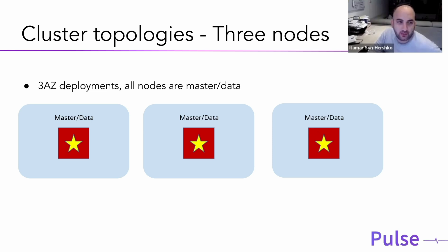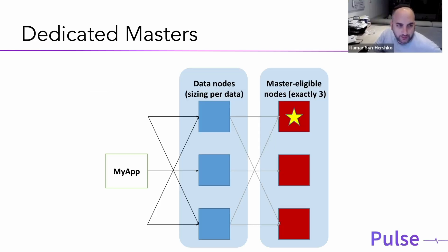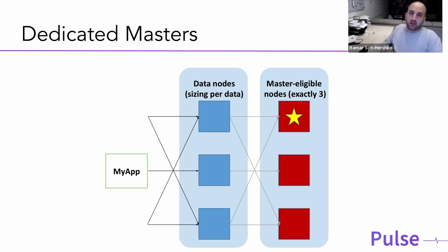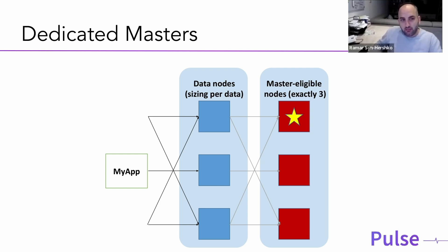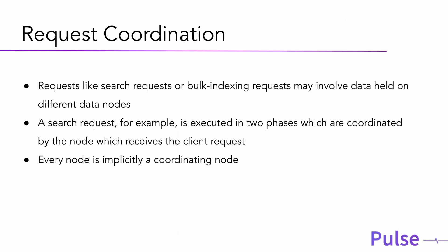The recommendation is to have a dedicated master node with no data on it at all. For small clusters where you don't want to add more nodes, you can assign a voting-only role to a data node instead. A master-only node doesn't need many resources, but a node that is both master and data could be starved. For large clusters, you should really have dedicated master-eligible nodes.